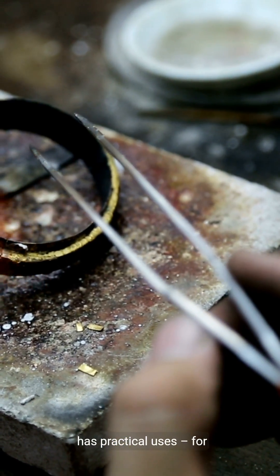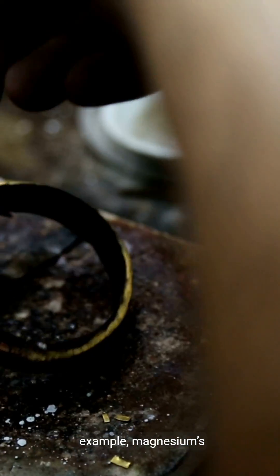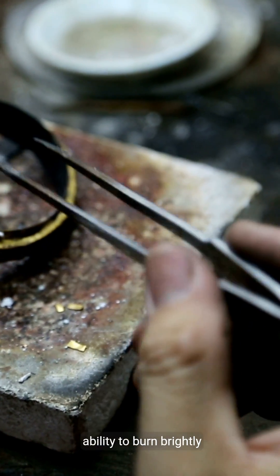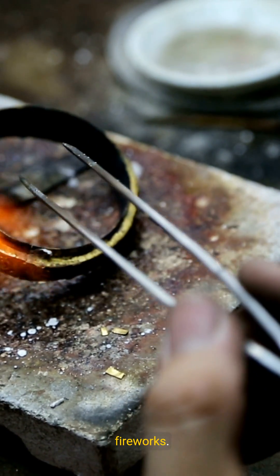Even the reactivity of metals has practical uses. For example, magnesium's ability to burn brightly is utilized in flares and fireworks. Additionally, the resistance to corrosion seen in stainless steel is essential for building materials in harsh environments.